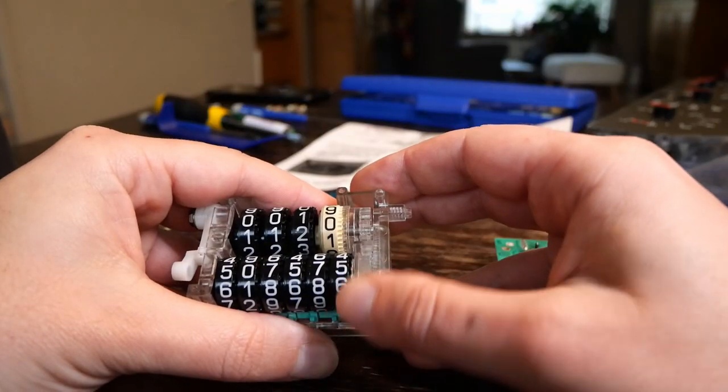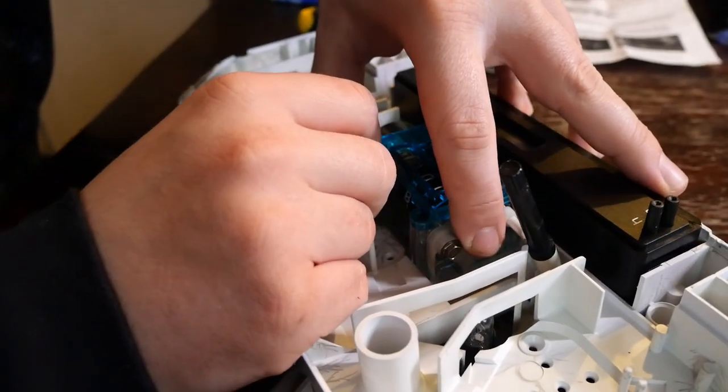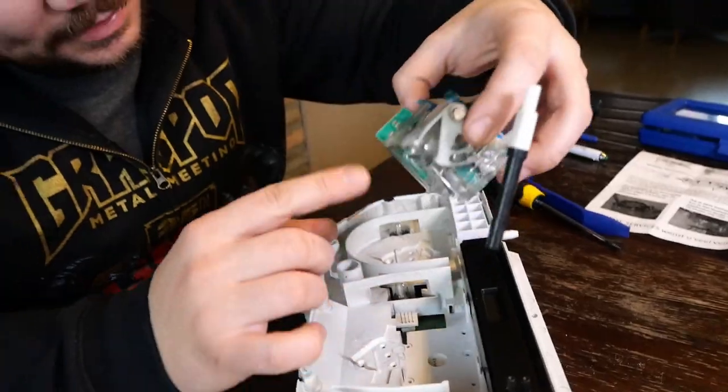So something a little different today, if I'm correct. We know how to do it. Yeah, we'll see about that. Alright, in order to correct the kilometers we'll have to remove the odometer from the cluster and that means we have to take the cluster apart.